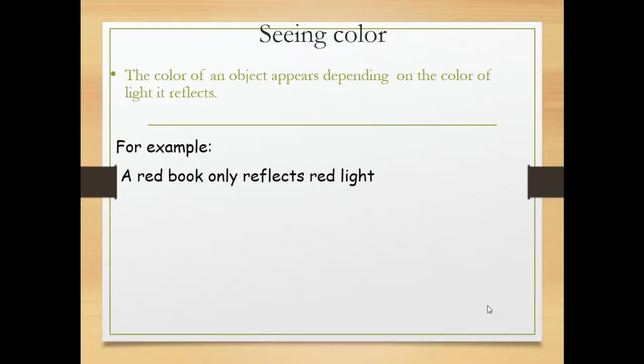The color of an object appears depending on the color of light it reflects. For example, a red book only reflects red light. So when I wear a red t-shirt or yellow t-shirt, what is the reflected light ray? The same color of the object.